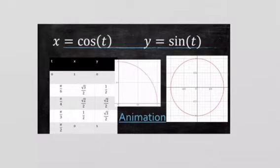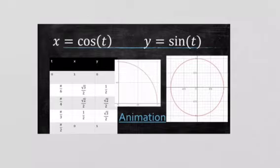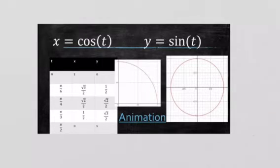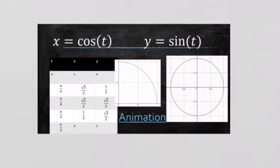The first thing this worksheet prompts you to do is type in cosine A, sine A to see what kind of path it takes. You should see that it's taking a circular path — in fact it's just the unit circle. This should make sense because when we first talked about the unit circle, we said X is cosine and Y is sine. Now we're having our input be a time so that we have an object that's continually traveling around the unit circle as time goes on.